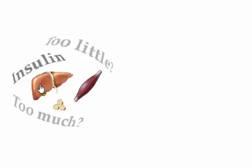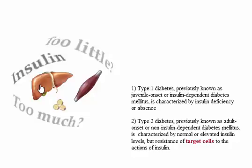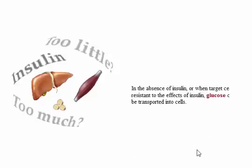There are two types of diabetes mellitus. Type 1 diabetes, previously known as juvenile onset or insulin-dependent diabetes mellitus, is characterized by insulin deficiency or absence. Type 2 diabetes, previously known as adult onset or non-insulin-dependent diabetes mellitus, is characterized by normal or elevated insulin levels but resistance of target cells to the actions of insulin.